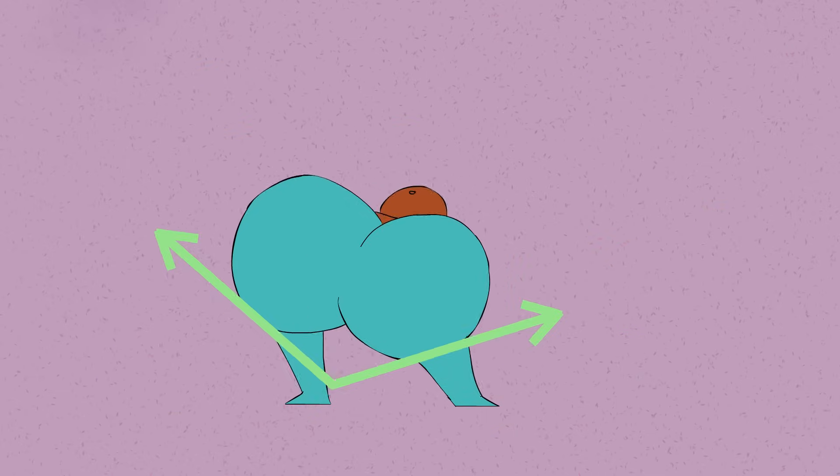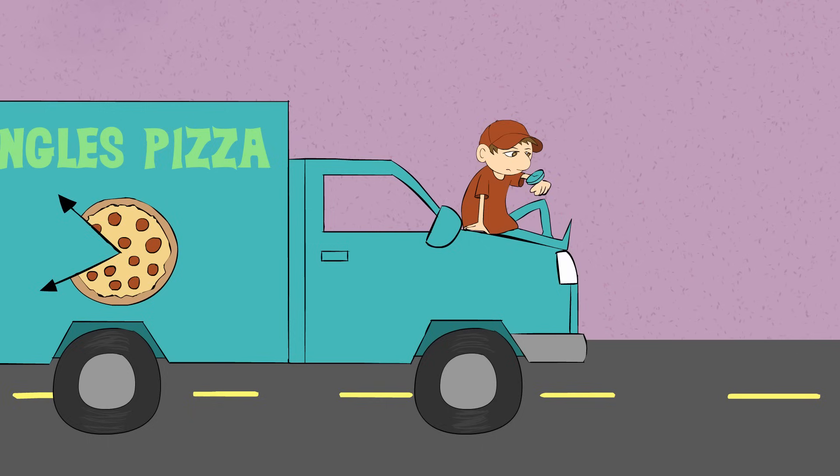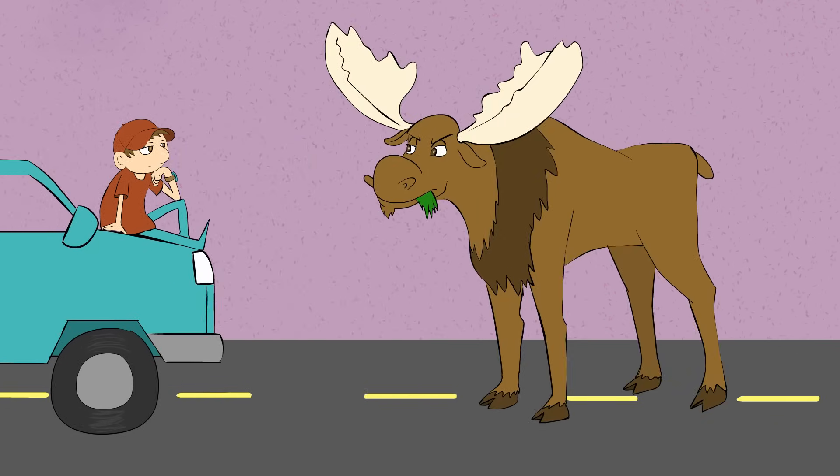This angle's kinda fat, it's got a big caboose. Like the hands on the clock when it's quarter to two, or the antlers on the head of a full-grown moose.